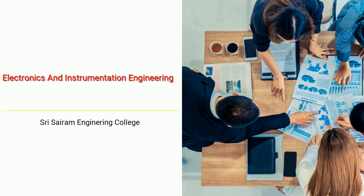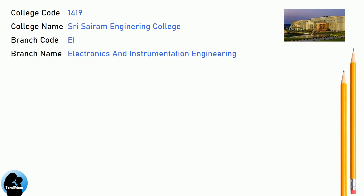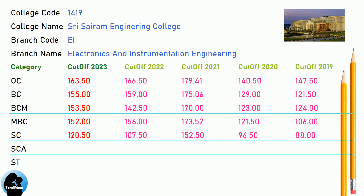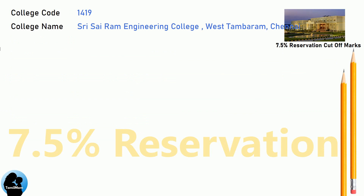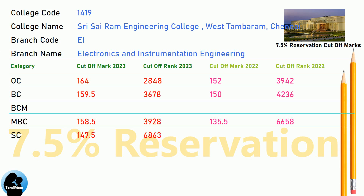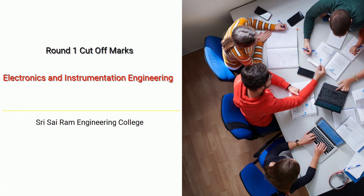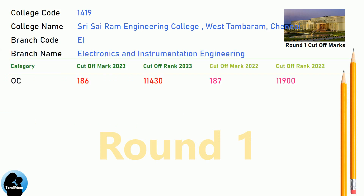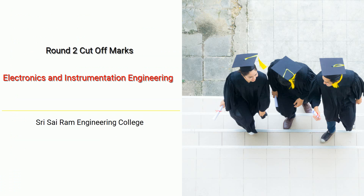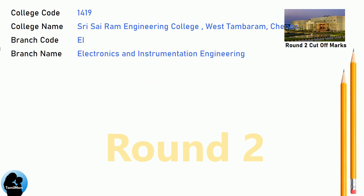DNA Cut-off for Shri Sai Ram Engineering College in Electronics and Instrumentation Engineering. DNA 7.5 Reservation Cut-off for Shri Sai Ram Engineering College in Electronics and Instrumentation Engineering. DNA Round 1 Cut-off for Shri Sai Ram Engineering College in Electronics and Instrumentation Engineering. DNA Round 2 Cut-off for Shri Sai Ram Engineering College in Electronics and Instrumentation Engineering.